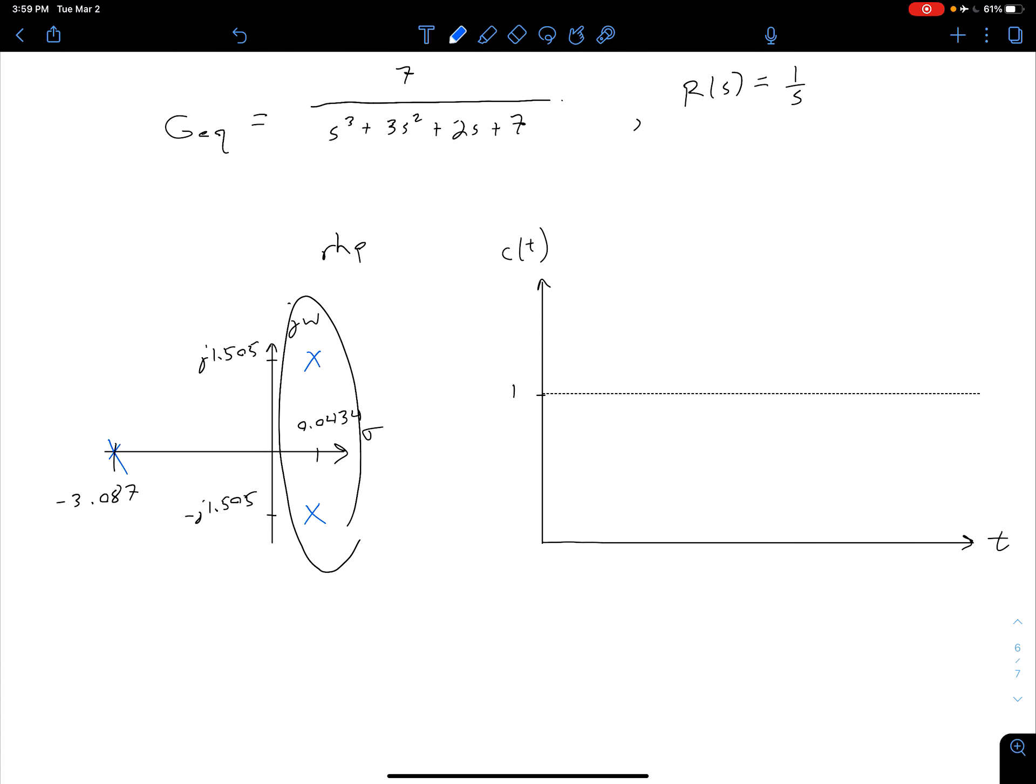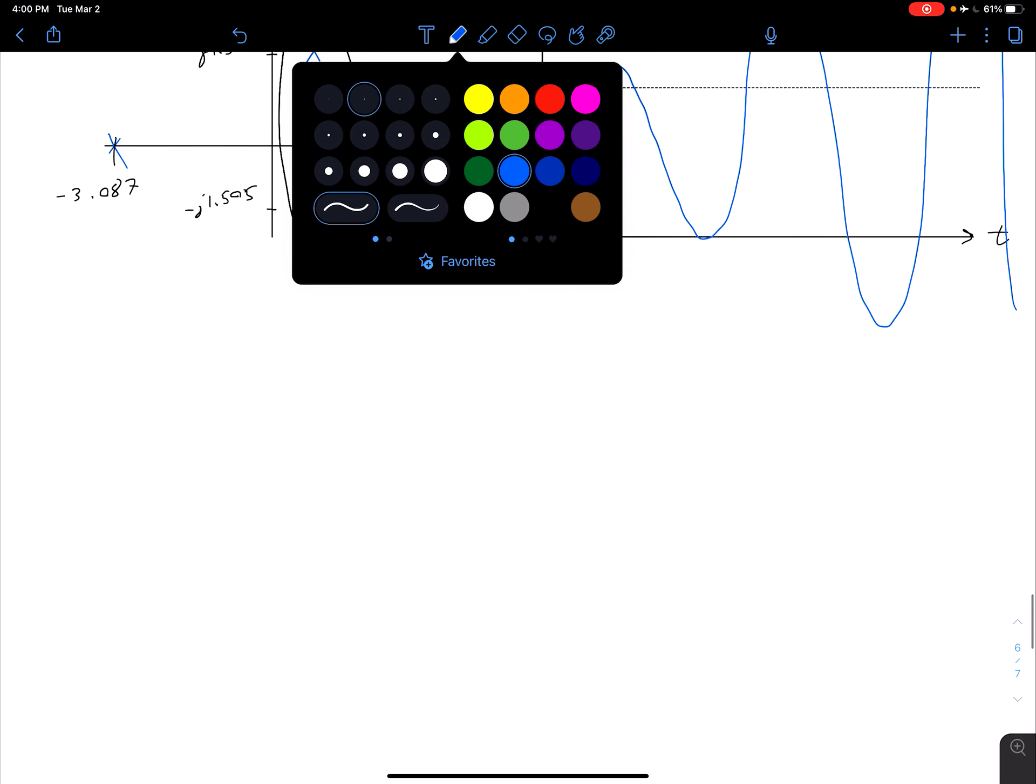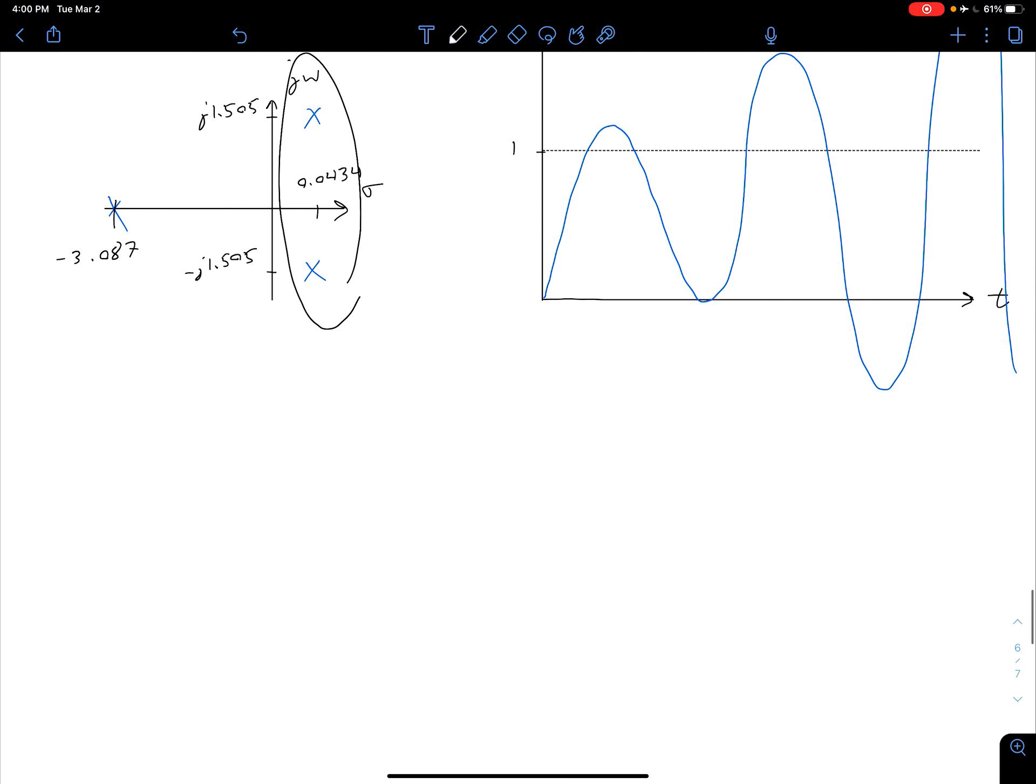And sure enough if we go to plot this in something like MATLAB or something similar our unit step response is going to look something more like this. So it's going to be growing as time goes on without bound. So it just keeps increasing. So we would say that this system of course then would be unstable.